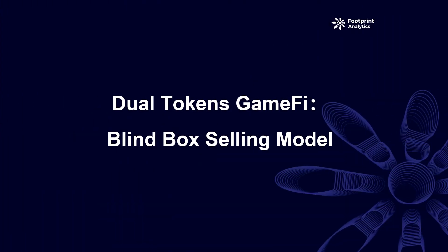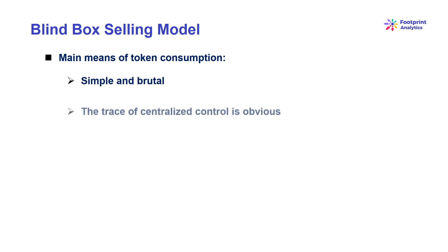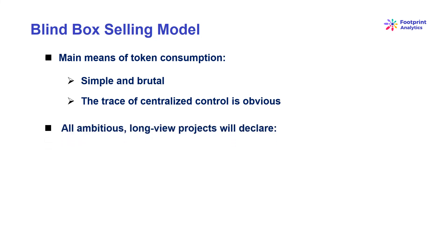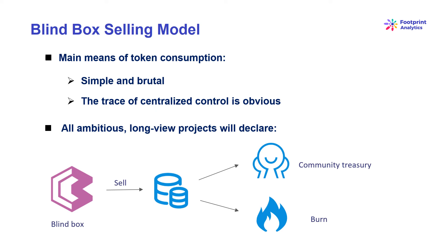The second model is the blind box selling model. Compared with the breeding model, the blind box is simple. The number of NFTs in the game is set by the team, and when the market is good or consumption goes up, players sell more. This buoys the price of the tokens because players need them to buy the NFTs. However, all ambitious, long-view projects will declare that most of the money from blind box sales — whether in USDT or utility tokens — goes straight to the community treasury or is burned. The reason Starsharks is so popular is that it announced to burn 90% of the utility tokens from blind box sales.